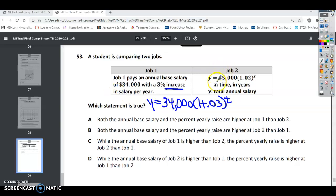Job 2 goes ahead and gives us the equation y equals $35,000 times 1.02, which is 2%, so that's going to be a 2% salary increase for x number of years and y's total salary.